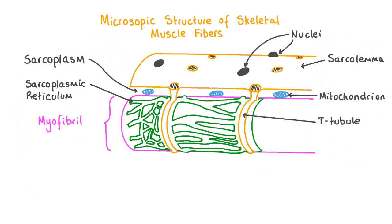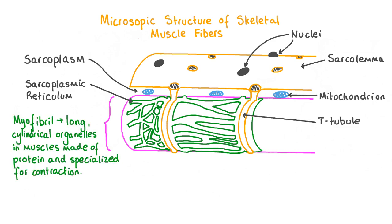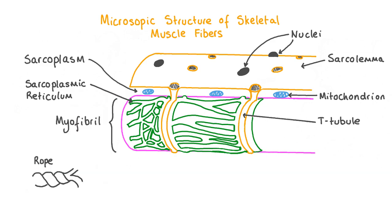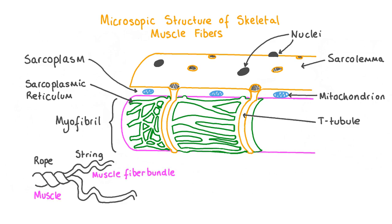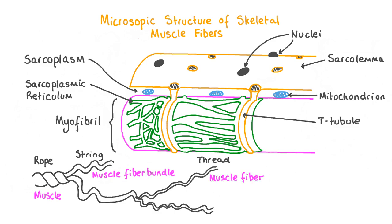Each muscle fiber contains long cylindrical organelles called myofibrils, which are made up of protein fibers. There can be between 1000 and 2000 myofibrils in just one muscle fiber, arranged in parallel to each other and to the muscle fiber along its interior. Myofibrils are specialized for contraction. You can think of the structure of muscles like a rope: ropes are made of individual strings much like muscles are made of muscle fiber bundles, and each of those strings is made up of multiple threads much like muscle fiber bundles are each made up of multiple muscle fibers. The individual strands that make up each thread can be thought of as the myofibrils, which together provide the muscle with their combined strength.